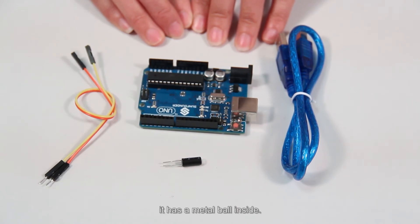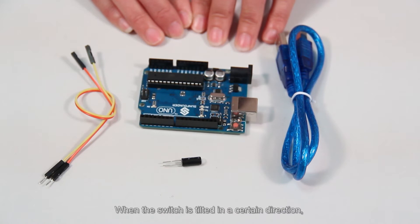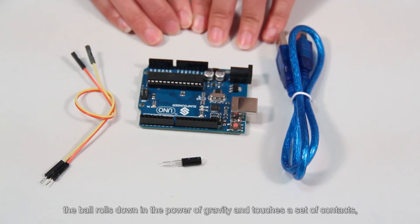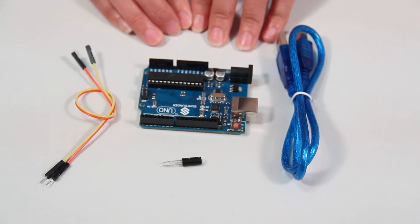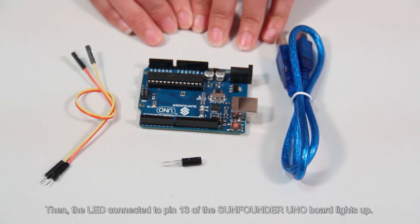When the switch is tilted in a certain direction, the board rolls down in the power of gravity and touches a set of contacts, thus completing the electrical circuit through those contacts. Then the LED connected to pin 13 of the SunFounder UNO board lights up.